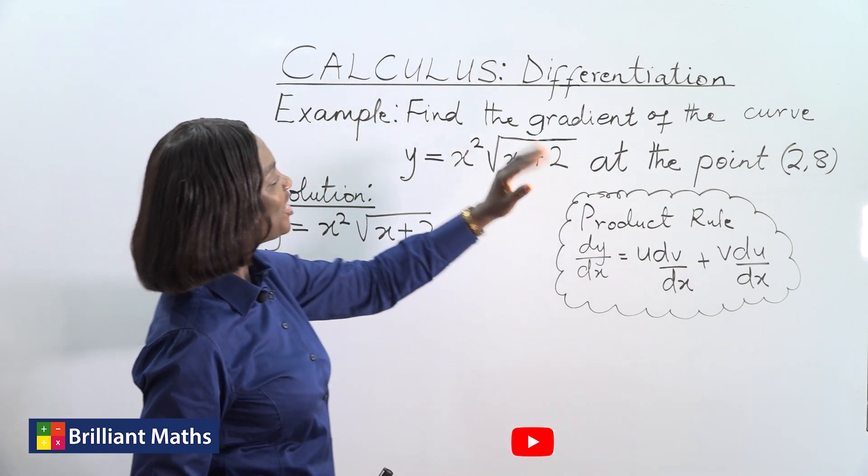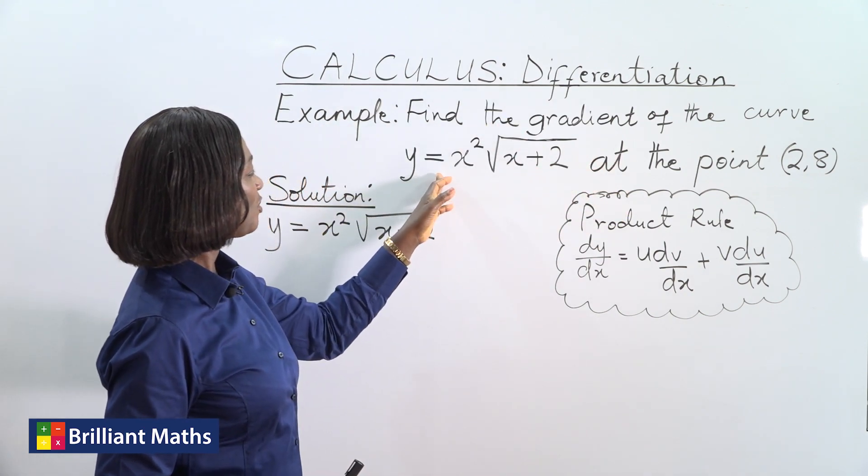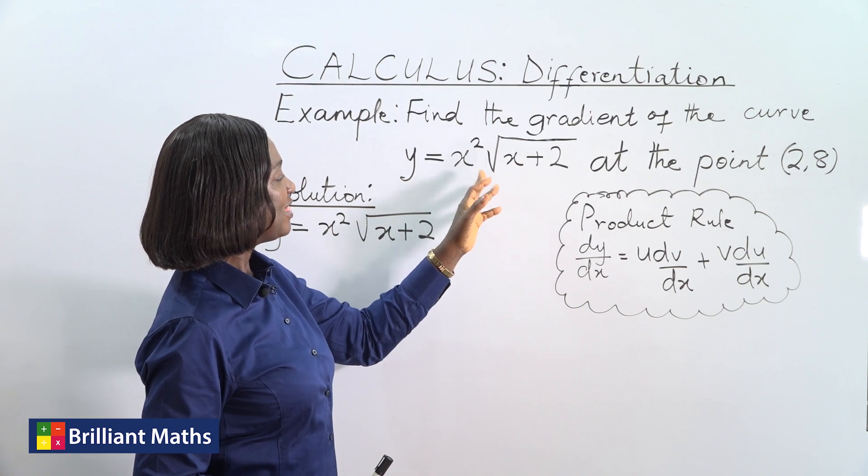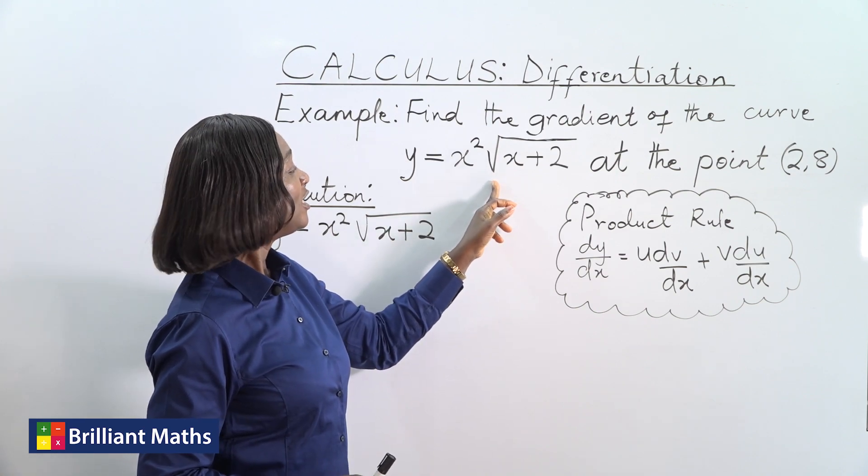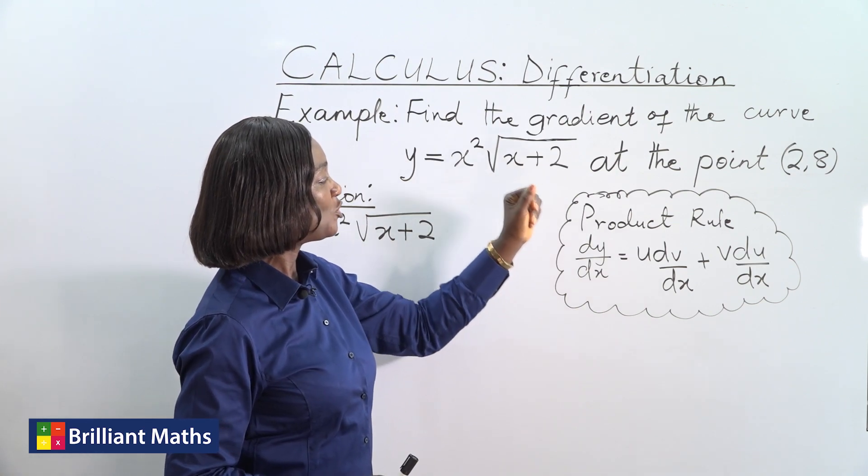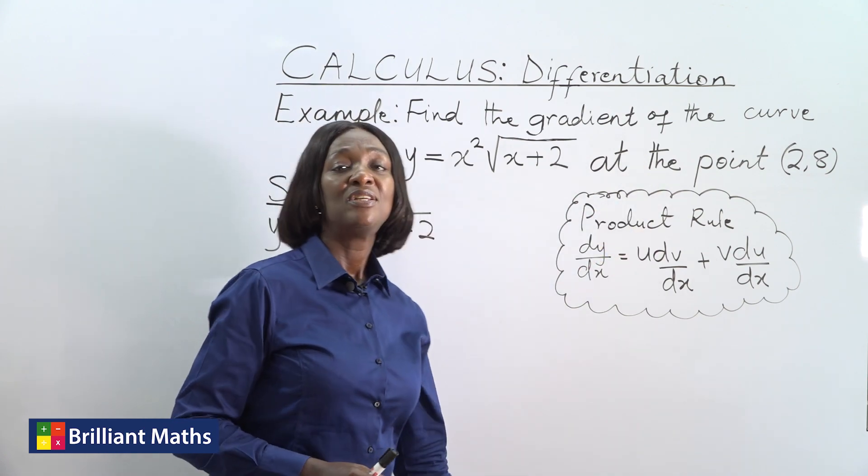For example, find the gradient of the curve y equals x squared times square root of x plus 2, at the point (2, 8).